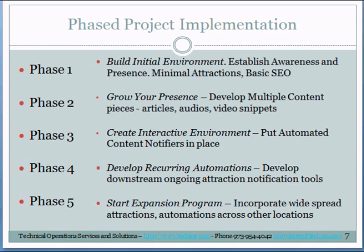We do it in a phased project implementation. First, we build your initial environment, make sure there's basic SEO — search engine optimization — in place, and there'll be some minimal attractions. Then we start growing your presence. This is when we go out and start developing multiple content pieces: articles, audios, videos — to get people to come to you. Once those things are in place, we start making the environment interactive, where you can not just do content but start doing videos and having more automations in place to keep this going. Once that happens, we go downstream — your blog site, which is downstream from your primary site, could feed into a network, whether it's a social network or a Twitter site — and we develop automation in those tools so they're on autopilot.